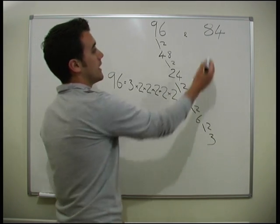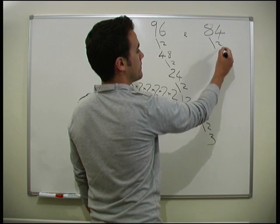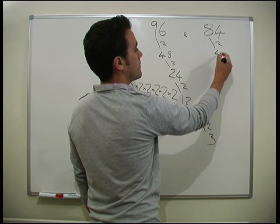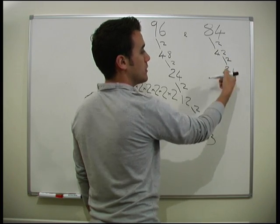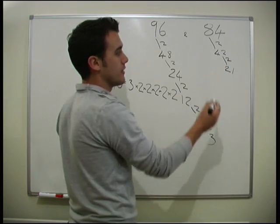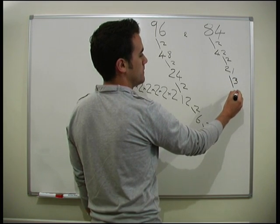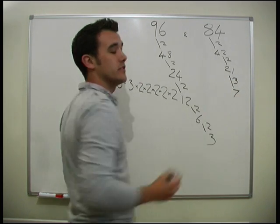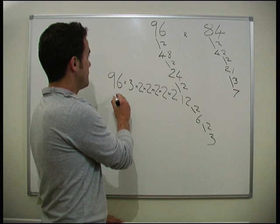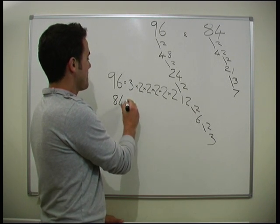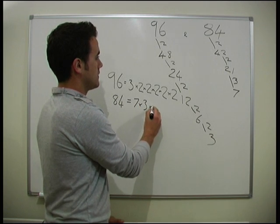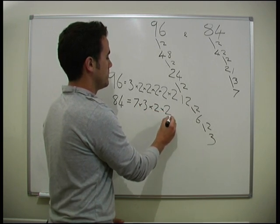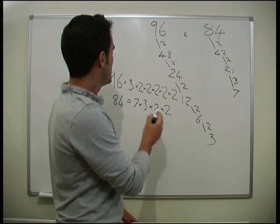Okay. And 84. Divide by 2 again. 21 won't divide by 2. So we'll try 3. It will divide by 3. It will divide by 7, and 7 is a prime number. So, 84 divides as 7 times 3 times 2 times 2. So, again, we'll go through and cross off any that match up.